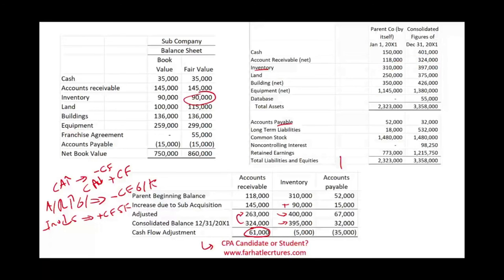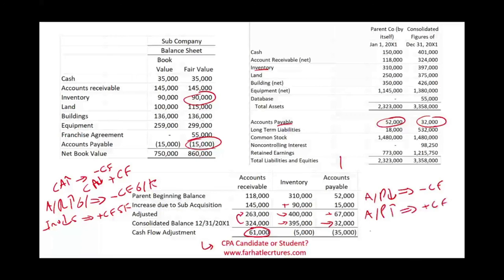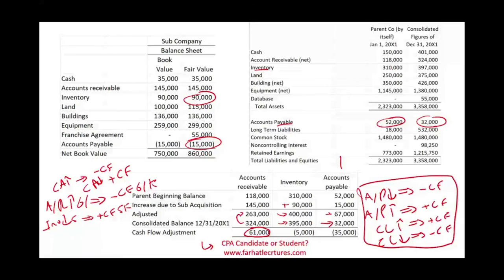Now for liabilities — accounts payable. We started with $52,000, acquired the subsidiary's liability of $15,000, giving an adjusted figure of $67,000. The consolidated ending balance is $32,000, so accounts payable decreased by $35,000. When accounts payable decreases, it means you paid it — that's a negative cash flow. If current liabilities go up, it's a positive cash flow; if current liabilities go down, it's a negative cash flow. Here, accounts payable decreased, giving a negative $35,000 adjustment.